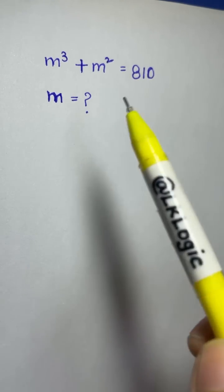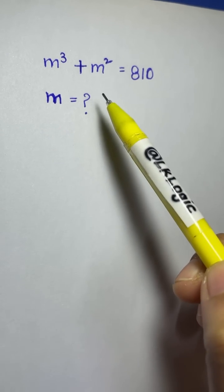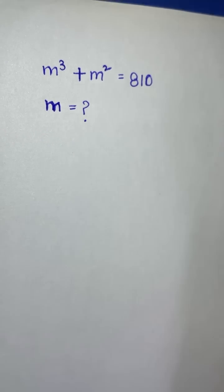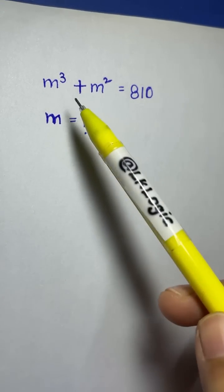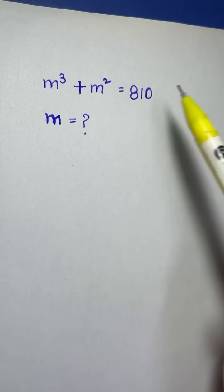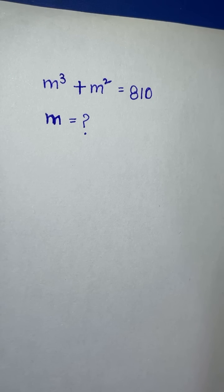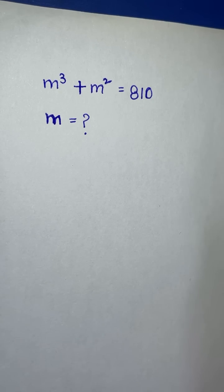Hi everyone! In this live session we are going to solve this algebraic equation: m cubed plus m squared is equal to 810, and we are going to solve for the value of m.